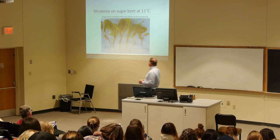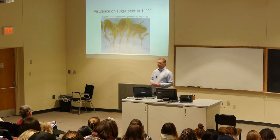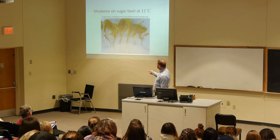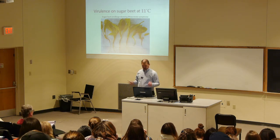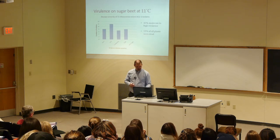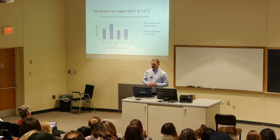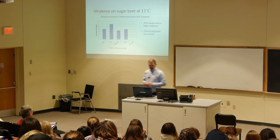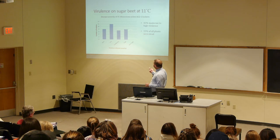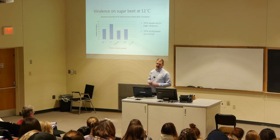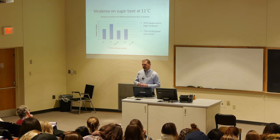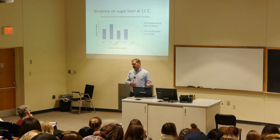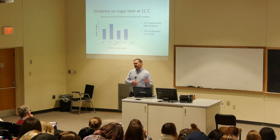Here are representative seedlings from that experiment. A healthy root with no disease is scored zero, going up to five which would be dead — a zero-to-five scale. In a histogram of 35 isolates tested at 11°C, 43% had moderate to high virulence at that temperature. 15% of all plants assayed were dead. So clearly Rhizoctonia can cause disease even as low as 11°C.